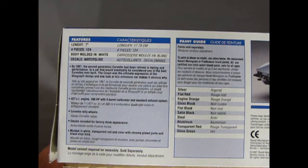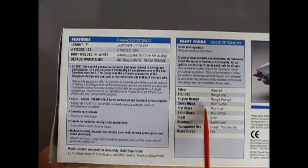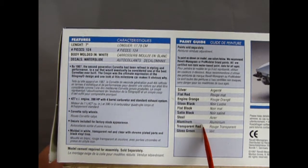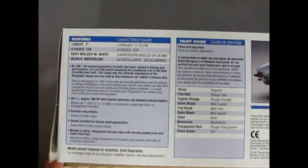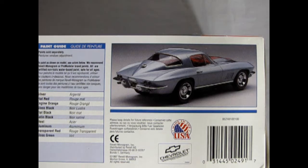Then, over here, we get our painting guides. You need silver, flat red, engine orange, gloss black, flat black, satin black, steel, aluminum, transparent red, and gloss green to paint the model. Here's a nice rear three-quarter view of the model itself.